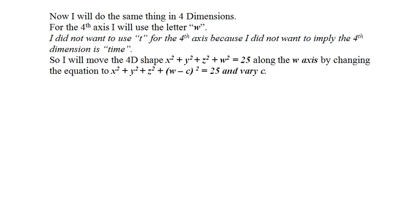So I will move the 4D shape, given by x² + y² + z² + w² = 25, along the W axis by changing the equation to x² + y² + z² + (w - c)² = 25, and I will vary the C.